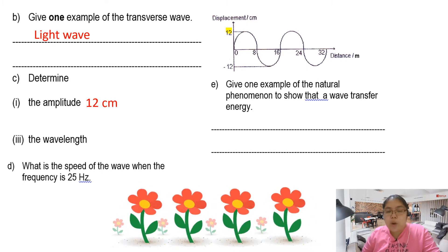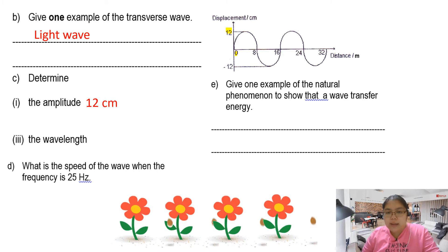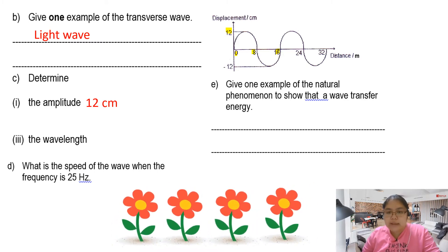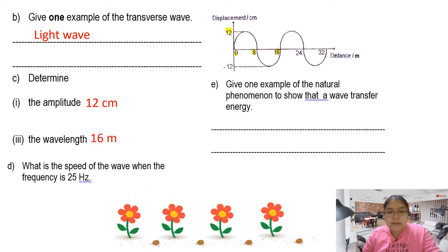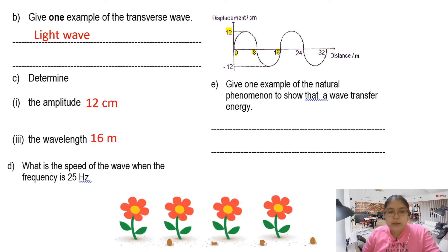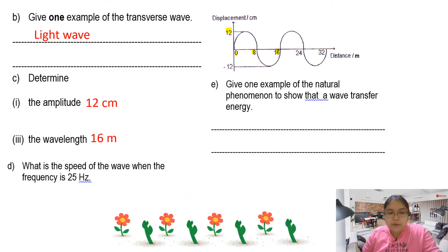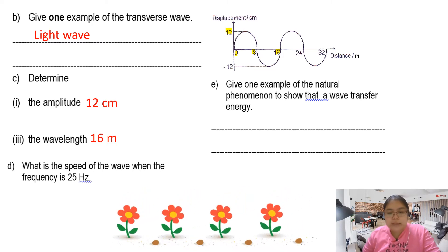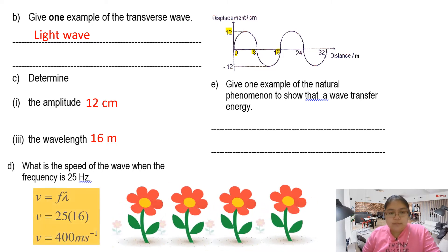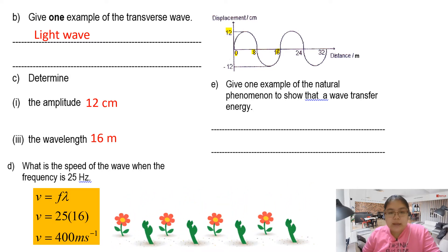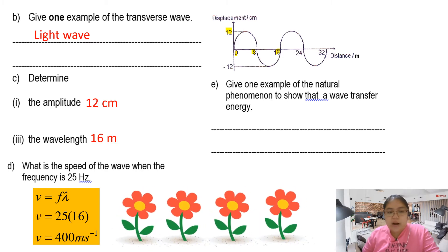Then wavelength — wavelength means one complete oscillation. From zero to eight they are just half, then to 16 that means you have completed one. So the answer should be 16 meters. What is the speed of the wave when the frequency is 25 hertz? That means we use V equals F lambda — 25 hertz multiplied by 16 meters — so I get 400 meters per second.